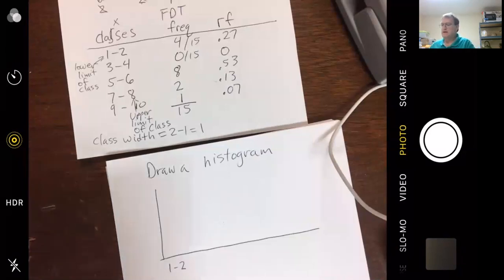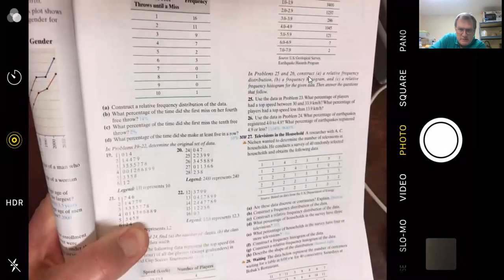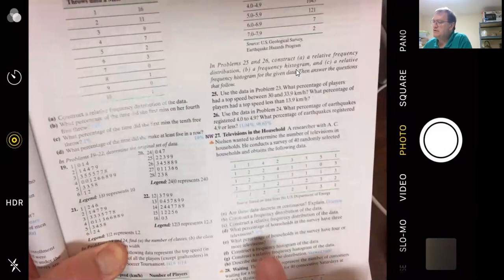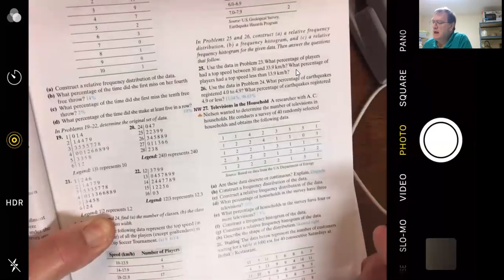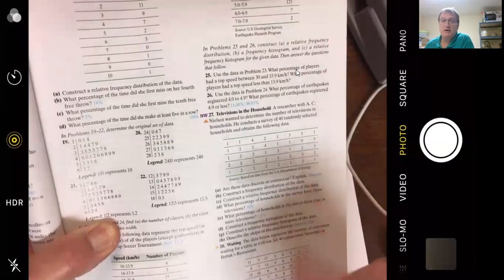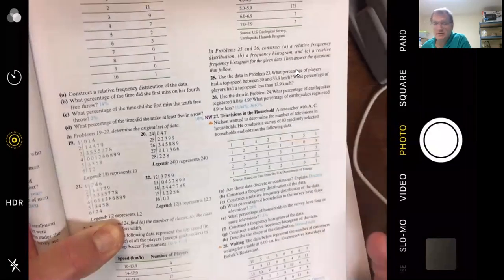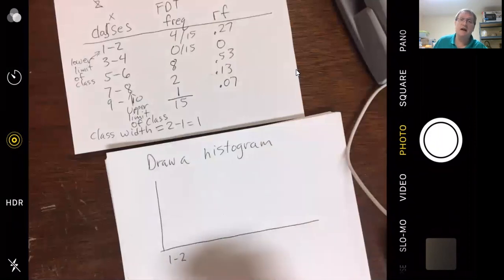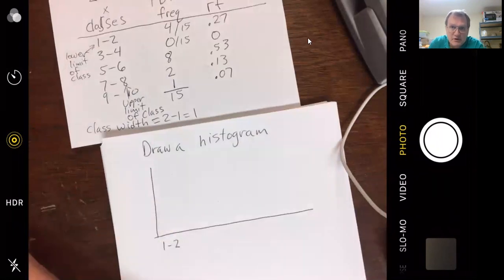So, for example, I think the last problem, and there may be some others, like 27 here. They ask if these are discrete or continuous data. This is the number of televisions in households. Hopefully, you'd know that would be discrete. And then construct a frequency distribution of the data. And they're not telling you how to set up your classes. You're kind of free to do it however you want. You could peek at the back of the book and do it their way. But if you did it a different way, it isn't wrong. So, no, they do not always give you the class widths. You can kind of, on a lot of the stuff, you can make them up.